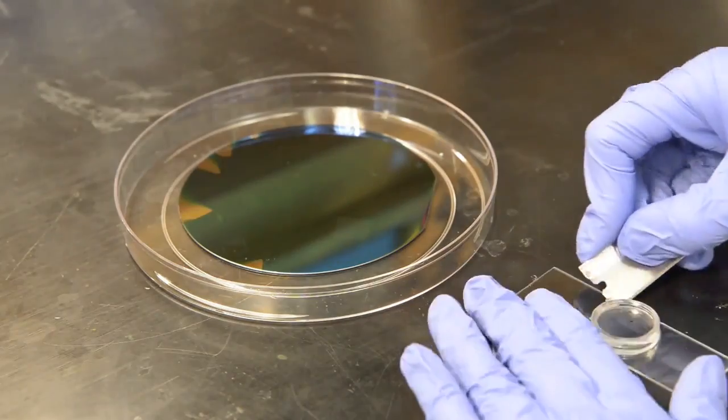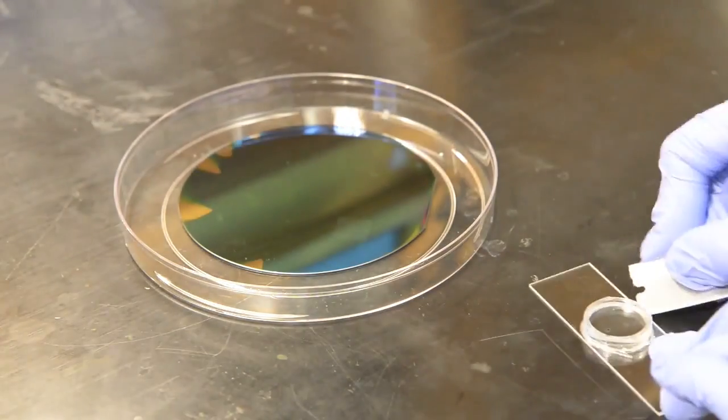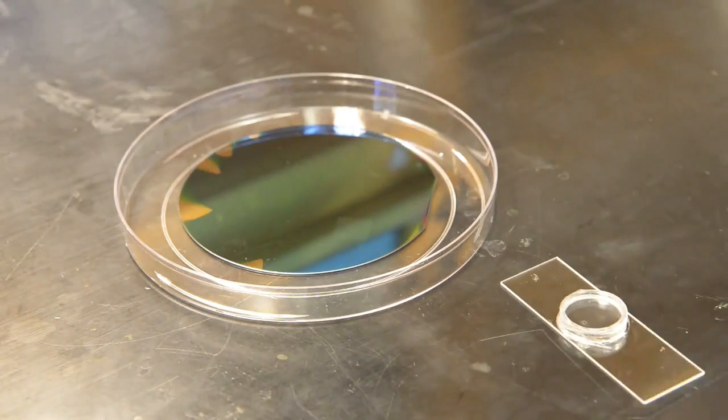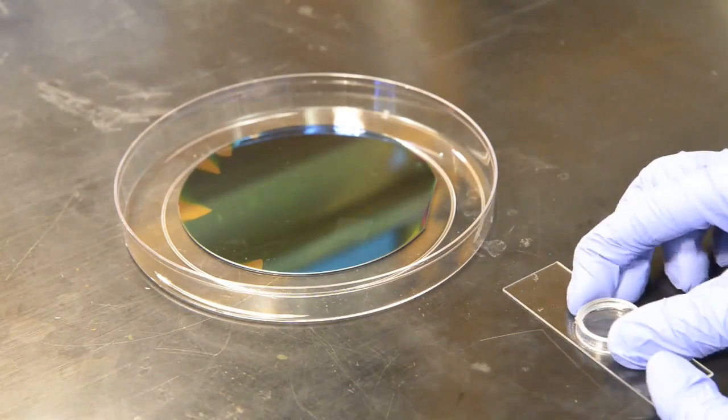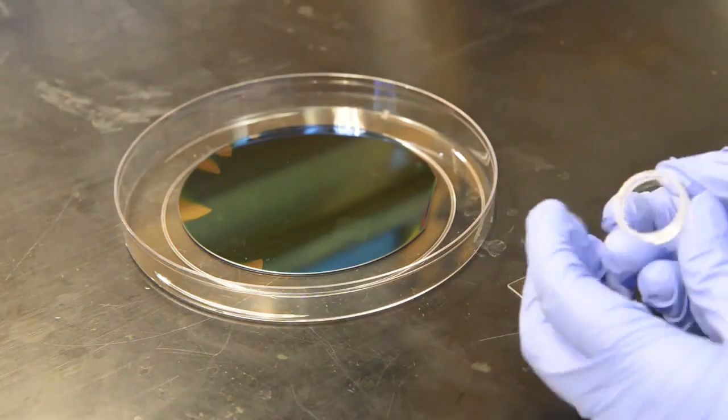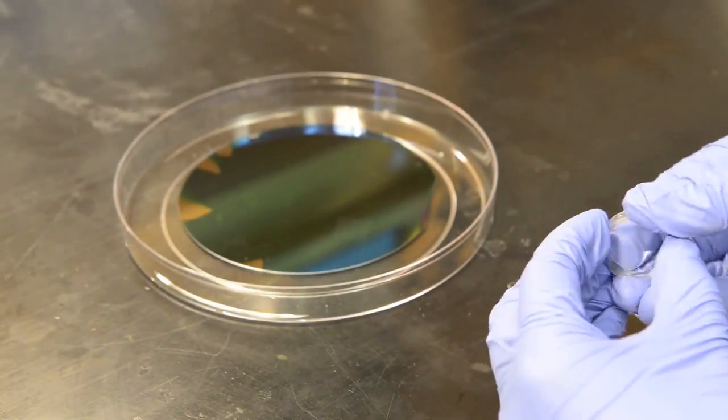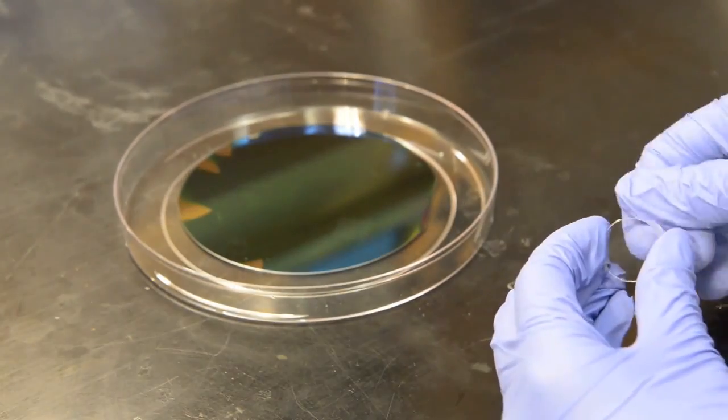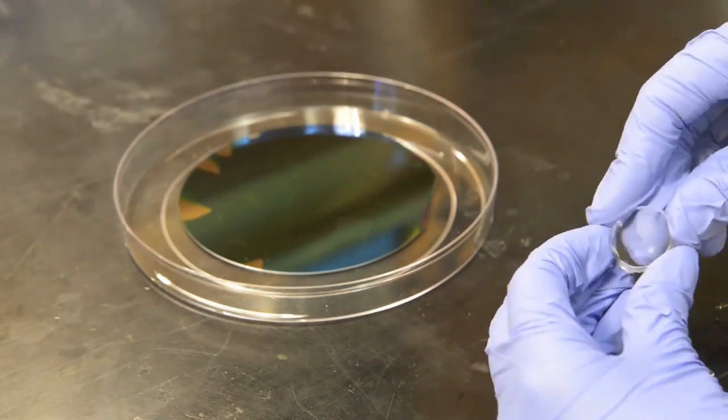Using a razor blade, cut the PDMS around the ring to release the stamp. Apply pressure to peel the ring from the glass slide backing. Push the stamp out of the ring. Remember to leave the patterned surface of the stamp untouched.